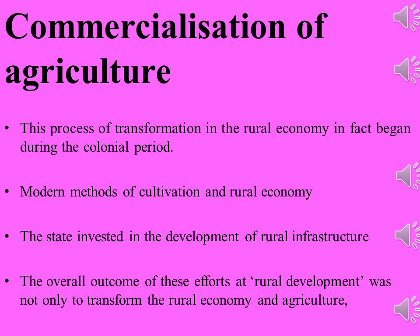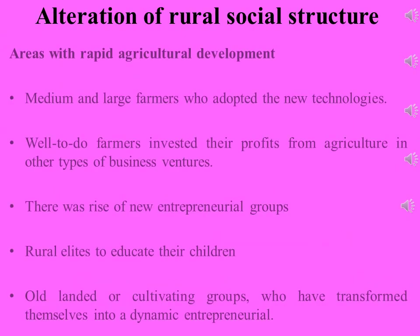The state invested in the development of rural infrastructure such as irrigation facilities, roads, electricity, provision of agricultural inputs, and credit through banks and cooperatives. The recently launched Deen Dayal Upadhyaya Gram Jyoti Yojana is an effort of the Indian government in this direction — a scheme designed to provide continuous power supply to rural India and support local agriculture.